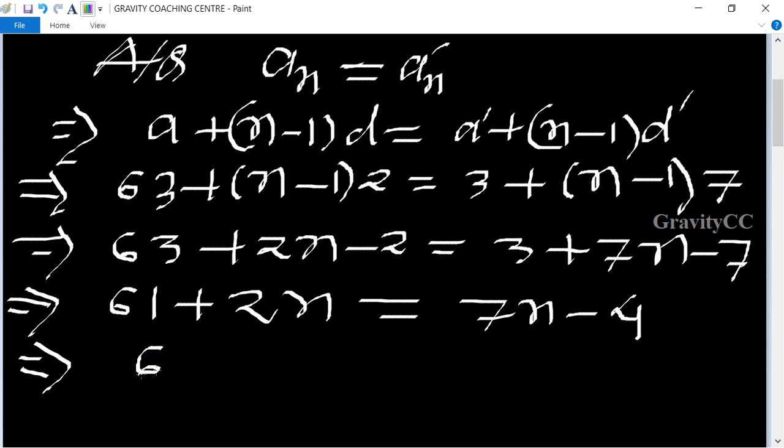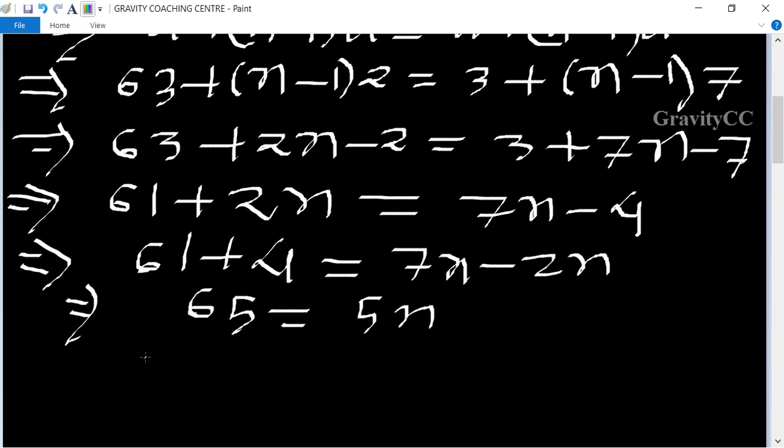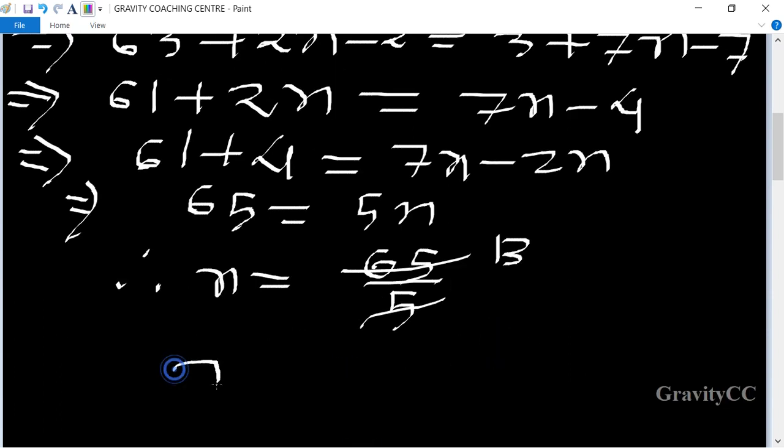Equals 65 equals 5n. Therefore n equals 65 upon 5, so n equals 13, which is the required answer.